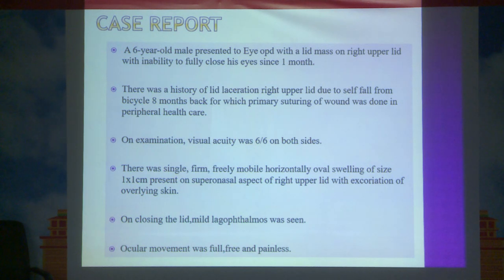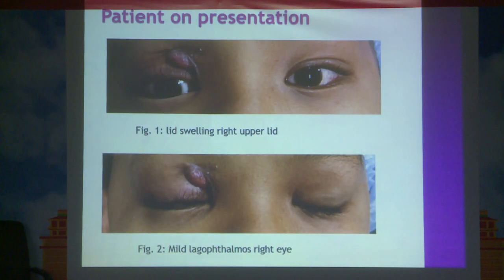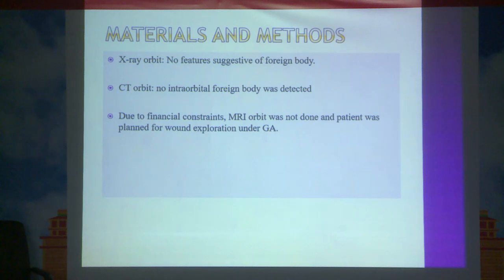X-ray orbit and CT orbit were done but no foreign body was found in either imaging. Due to financial constraints, the patient did not undergo MRI. Clinically, wound exploration under general anesthesia was planned. Preoperatively, oral antibiotics were started. Anterior orbitotomy was done through a lid crease incision under general anesthesia. Blunt dissection revealed a wooden foreign body of 6 mm which was grasped with artery forceps and removed completely along with granulation tissue. The wound track was explored for remnants, the orbit was copiously irrigated with antibiotic solution, and the wound was closed with 6-0 silk suture. Excised mass on histology was suggestive of granulation tissue only.